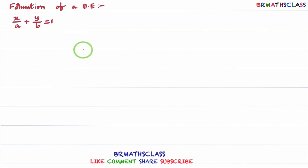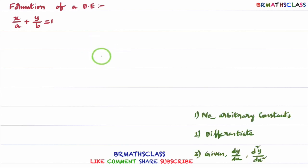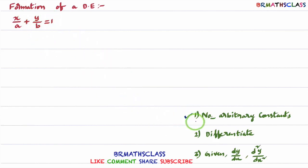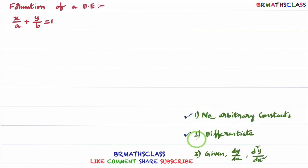To form a differential equation of the given curve, we will remember three steps. Step 1: identify the number of arbitrary constants present in the given curve. After identifying the number of arbitrary constants, you differentiate that many times. Suppose two arbitrary constants are present, you differentiate two times. After these two steps, if arbitrary constants A and B are eliminated, then whatever you get, that is the required differential equation.